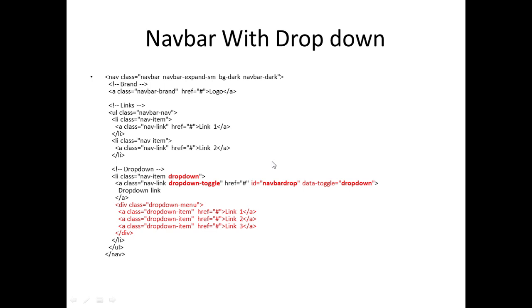For a navbar with dropdown: the same structure as before, but in the list item we add the dropdown class. The link uses the dropdown-toggle class and has an ID, and we add data-toggle equals dropdown. After the link, we place the dropdown menu items using the dropdown-menu class with individual dropdown-item elements for each item.